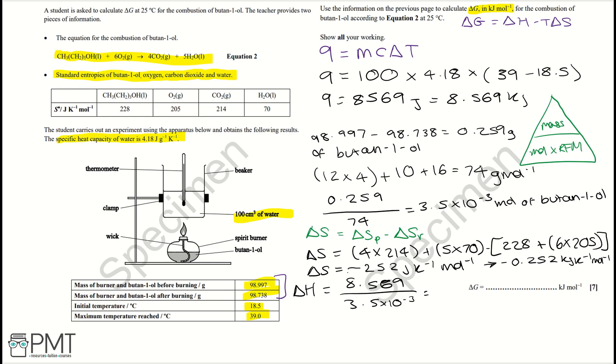So then delta G is going to be minus 2448 minus 298 times minus 0.252. And that equals minus 2373 kilojoules per mole, which we can then write on the answer line provided.